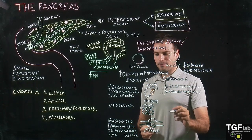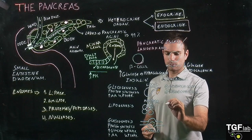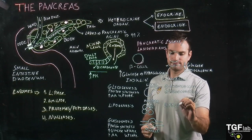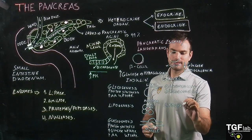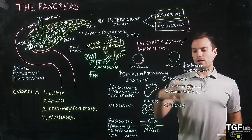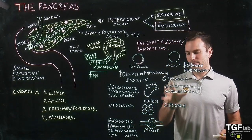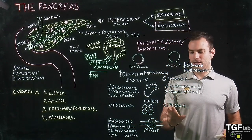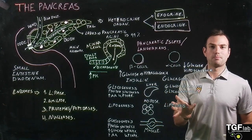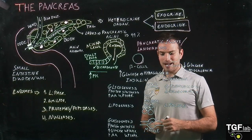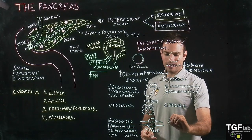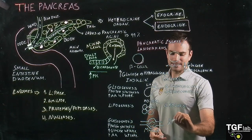In the adipose tissue, instead of lipogenesis, glucagon is going to promote lipolysis — the breaking down of fat. And finally, in the muscle, we are going to have a decrease of protein synthesis.